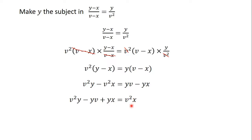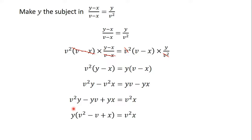Remember that when a term crosses the equal sign, the sign of the term changes — when it's negative it becomes positive, and when it's positive it becomes negative. From here, our next step is to factorize. I am going to factorize out the variable we want to make the subject, which is y. So I take y out and put the rest into bracket.